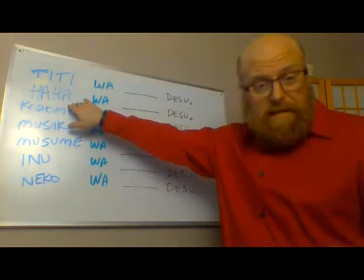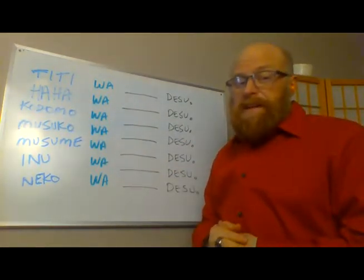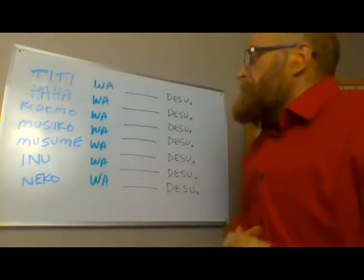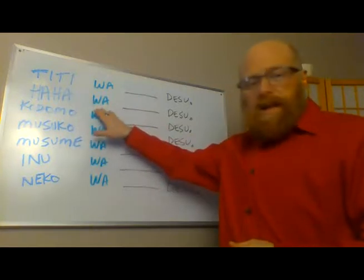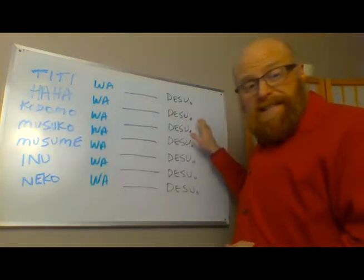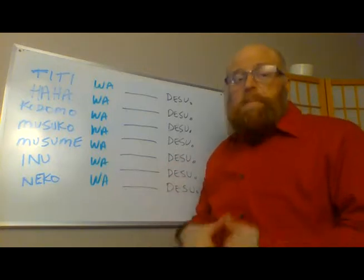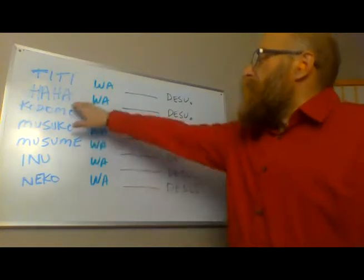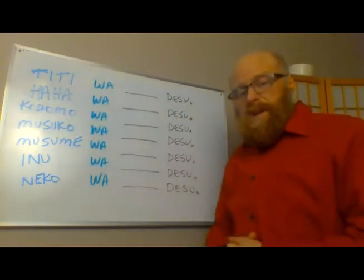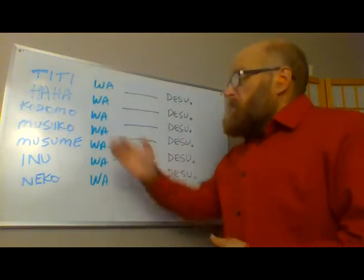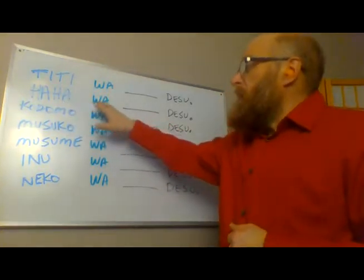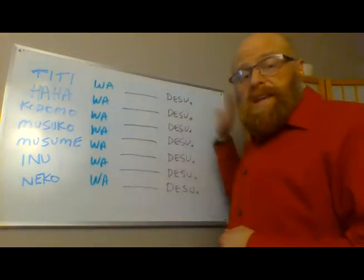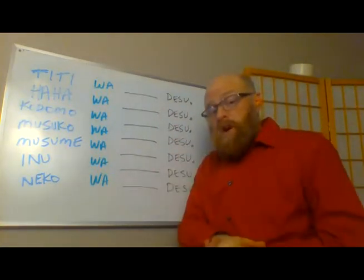Now let's get to mom. A lot of people feel this is kind of funny, but mother in Japanese — my mother — is ha-ha. So it's a little bit of a chuckle, but ha-ha. So ha-ha wa Dorothy desu — my mother's name is Dorothy. They're going to be listening to you very carefully, so give them a good pronunciation. Try it by putting in your own mom's name: ha-ha wa [name] desu.